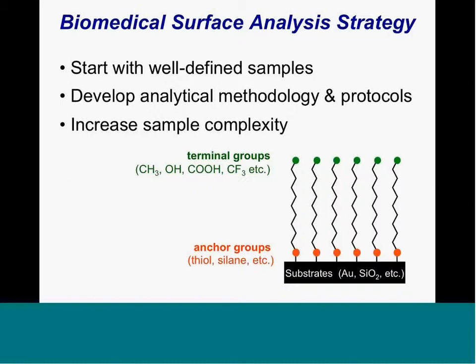Another strategy we like to use is to start out with well-defined samples where we can control the structure and surface chemistry, use those to develop the analytical methodology and protocols, and then increase the sample complexity and apply those developed protocols to try to obtain the same level of information from complex surfaces as from these well-defined samples. Self-assembled monolayers are really the classic example of how to control surface structure and chemistry and systematically vary it.